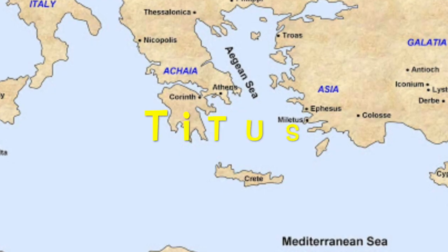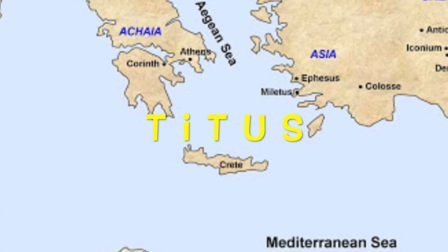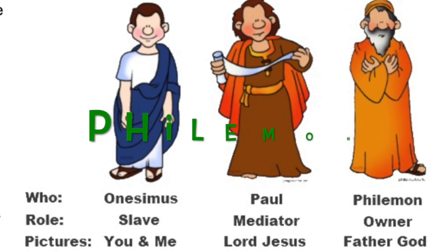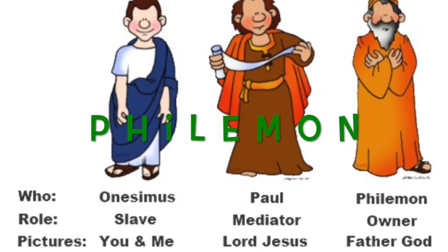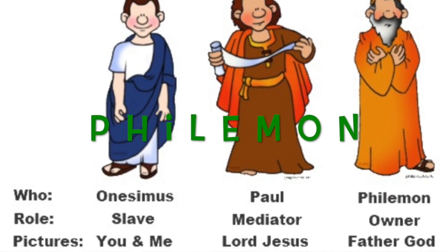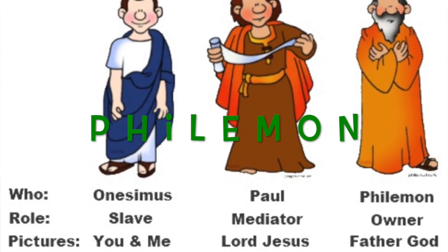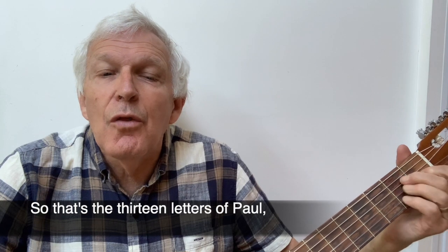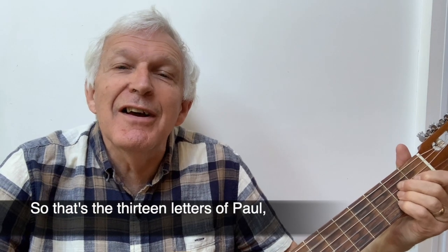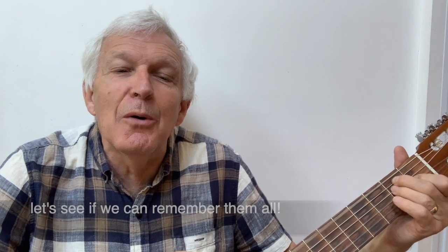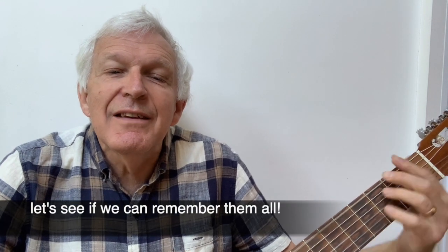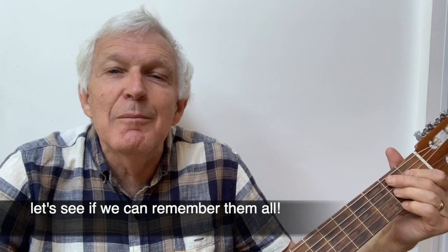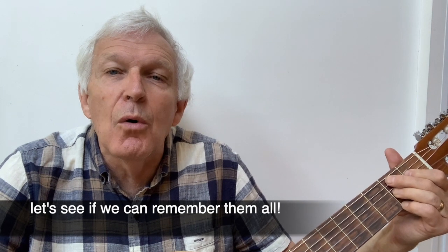Titus ordained good leaders in Crete. Philemon — Onesimus, forgive him when you meet. So that's the 13 letters of Paul. Let's see if we can remember them all.